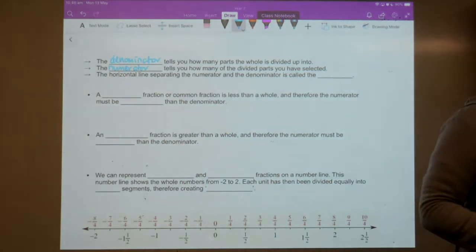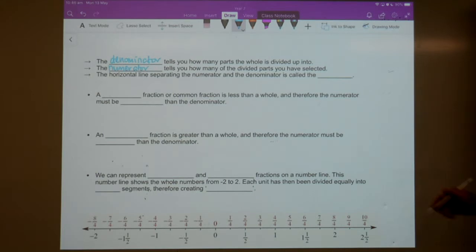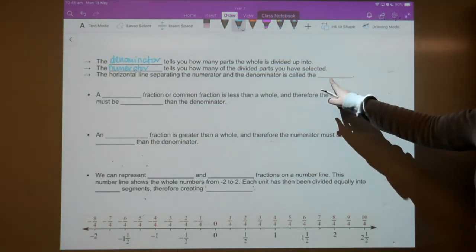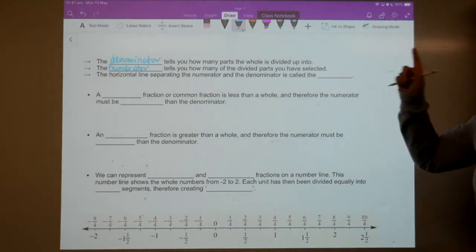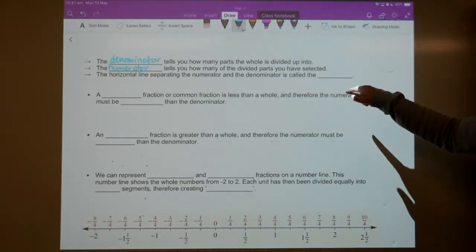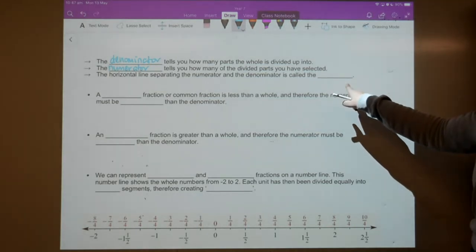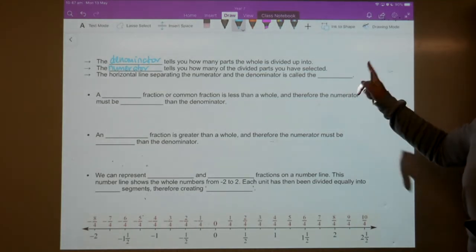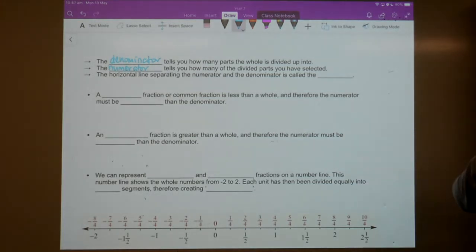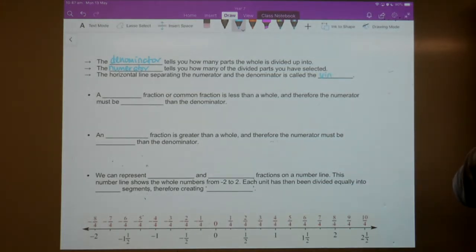This bit here, the horizontal line separating the numerator and the denominator, does have a special name. Sometimes we might call it a fraction bar, sometimes we might call it a divide sign, but it's actually got a proper name, and the proper name is vinculum. A vinculum. A vinculum. All right? It's called a vinculum. So, it does have a proper name.